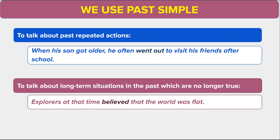We use the past simple to talk about long-term situations in the past which are no longer true. For example, explorers at that time believed that the world was flat.